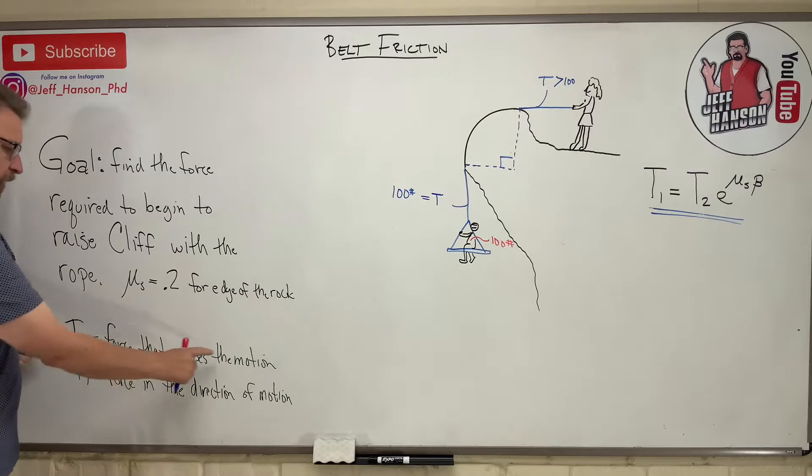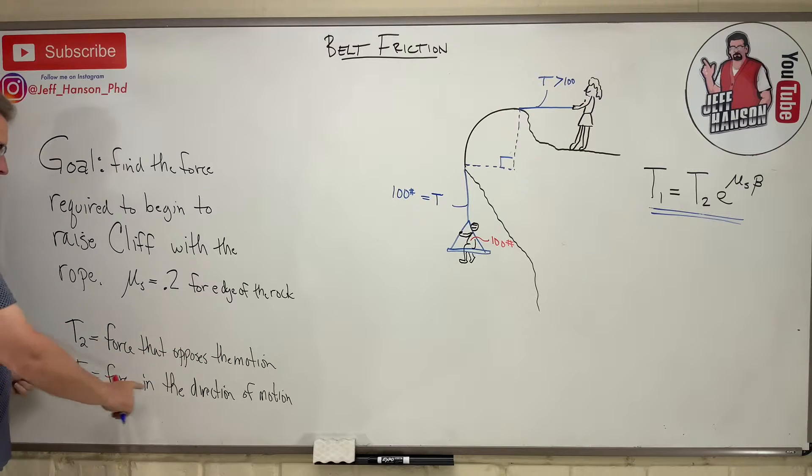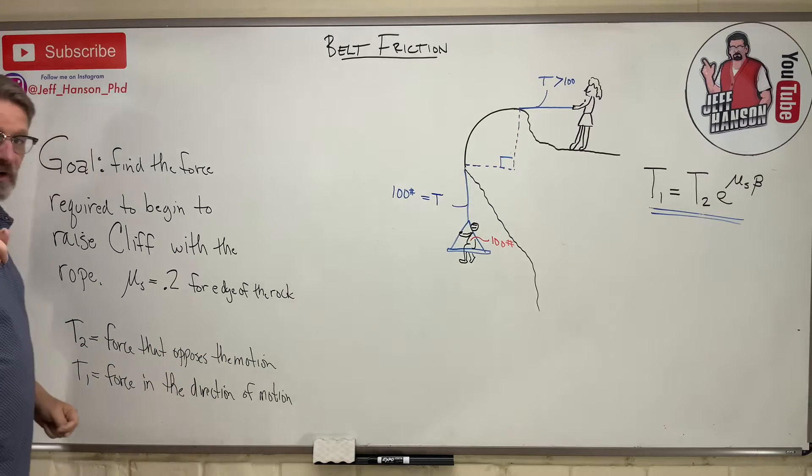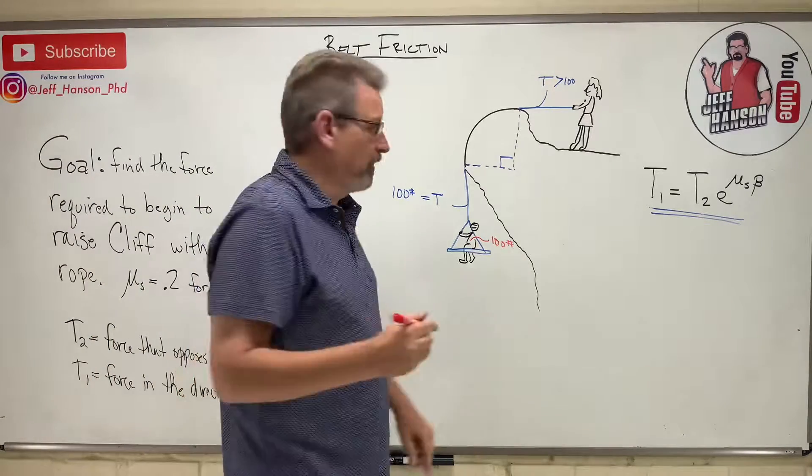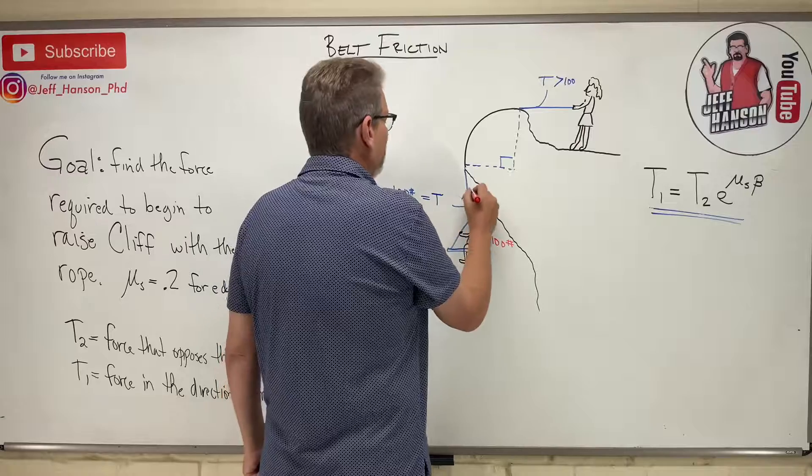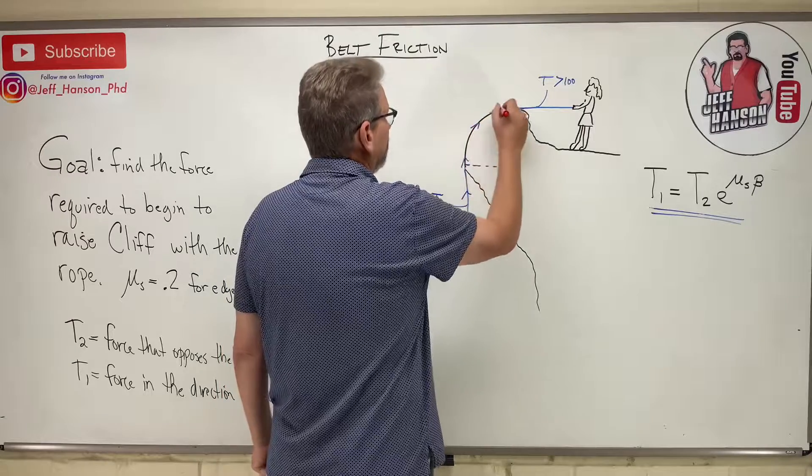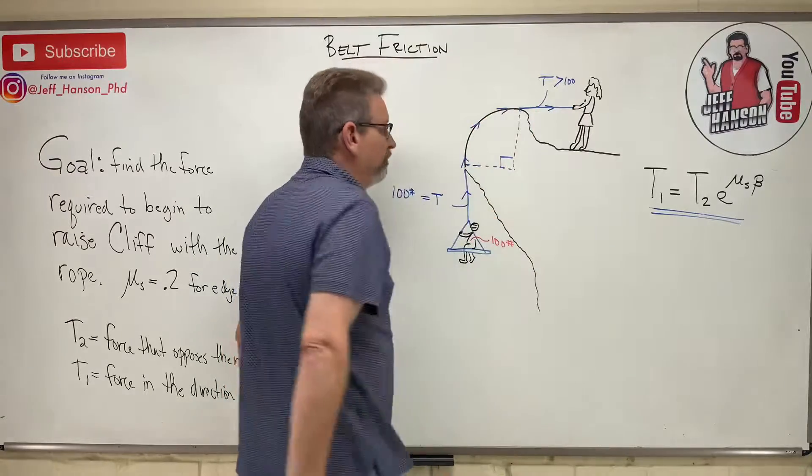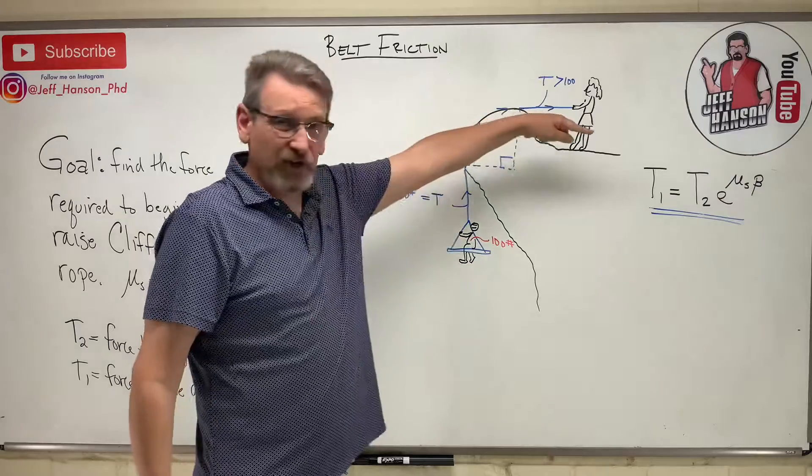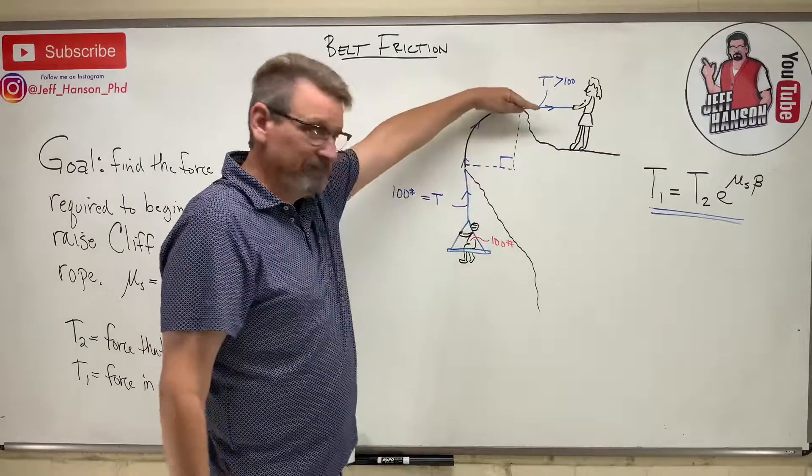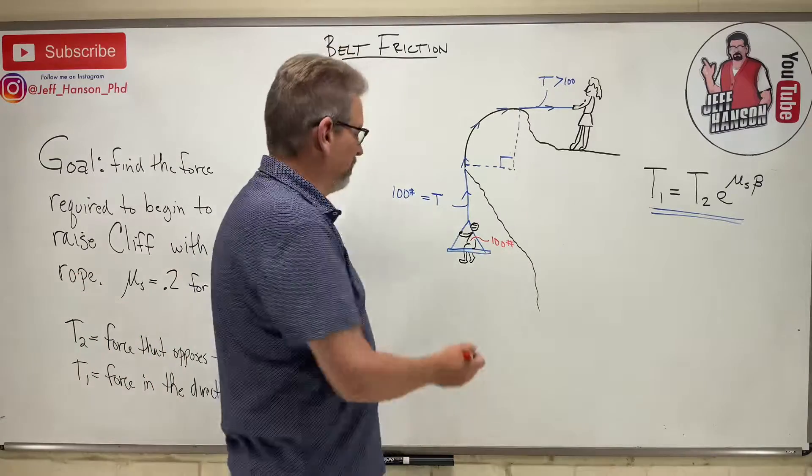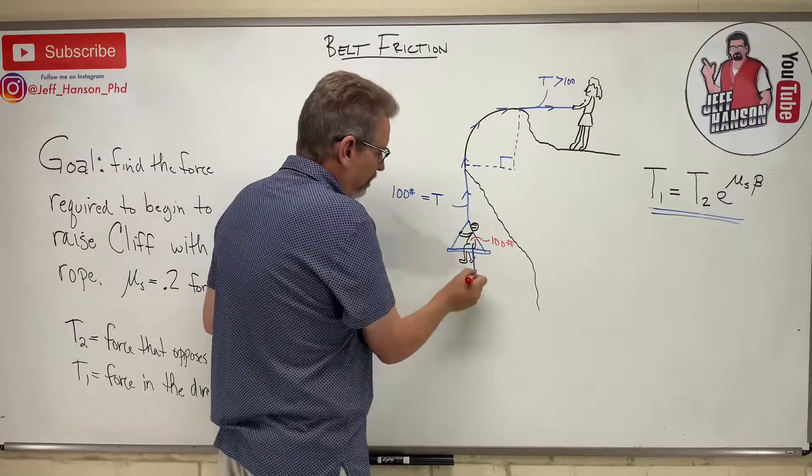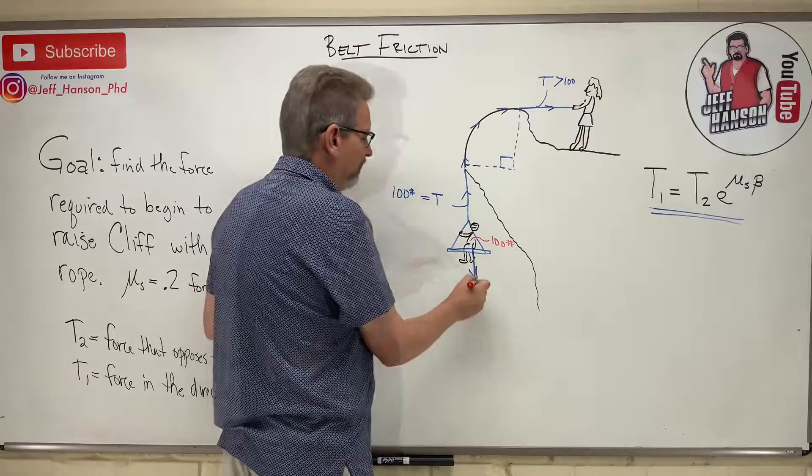Let me tell you about T1 and T2. T2 is the force that opposes the motion. T1 is the force in the direction of the motion. When she starts to raise Cliff, where's Cliff going? Well hopefully Cliff is going this way. That is the direction of the motion. Cliff, what's he doing? He's opposing the direction of the motion because Cliff's weight is acting down.